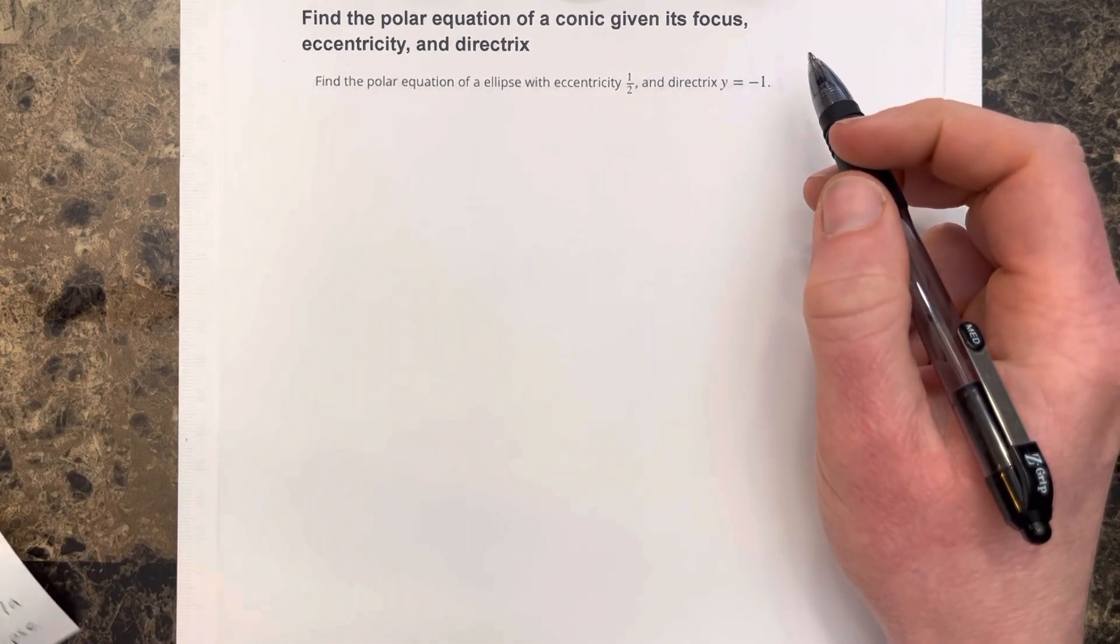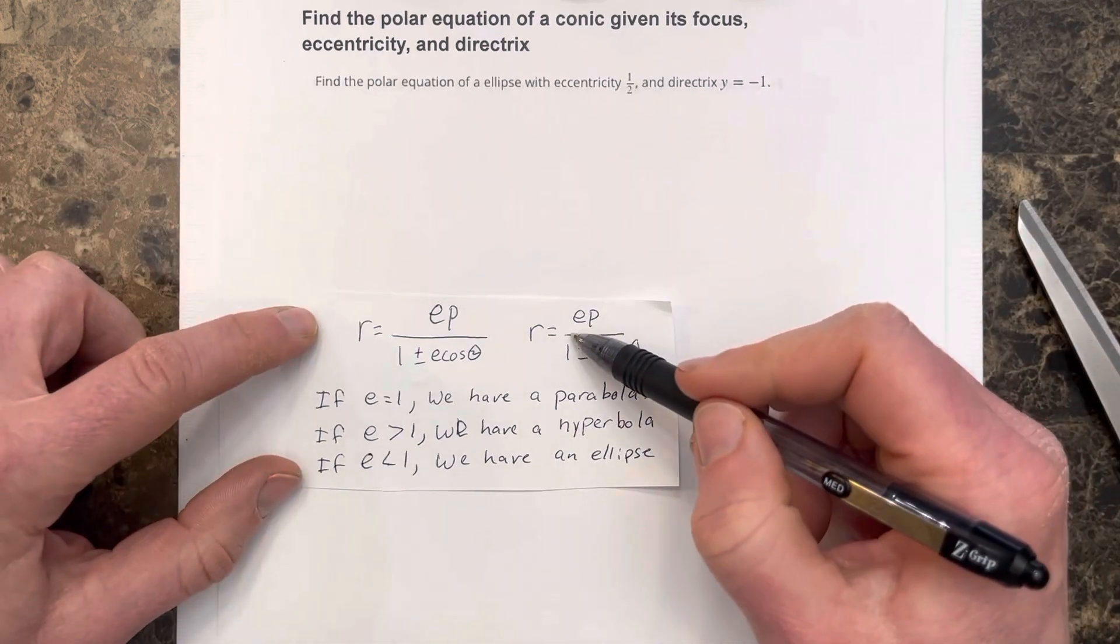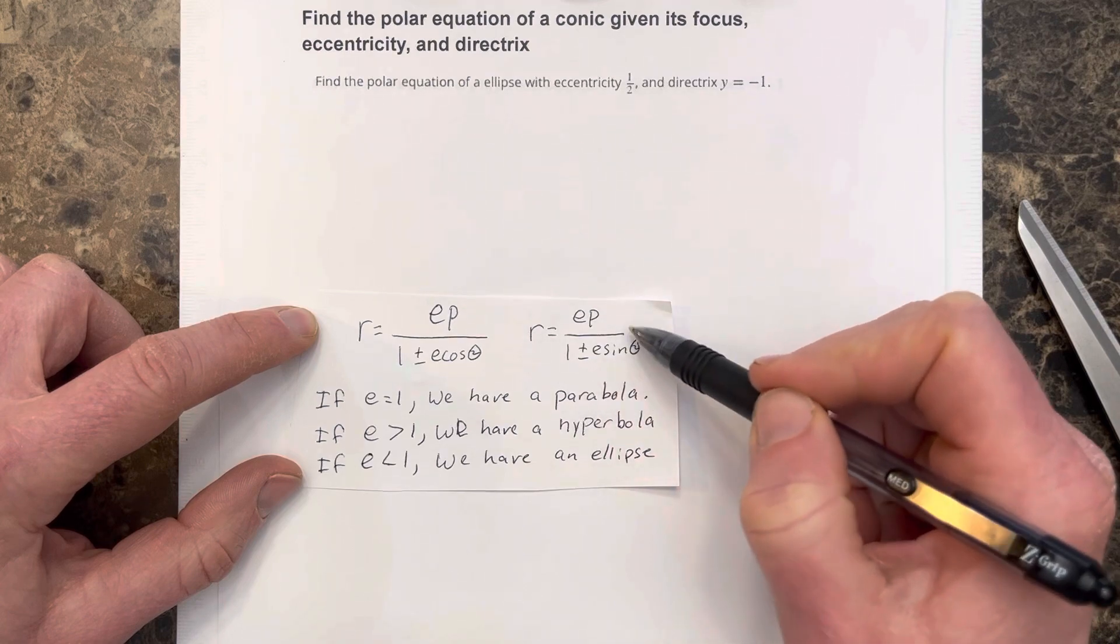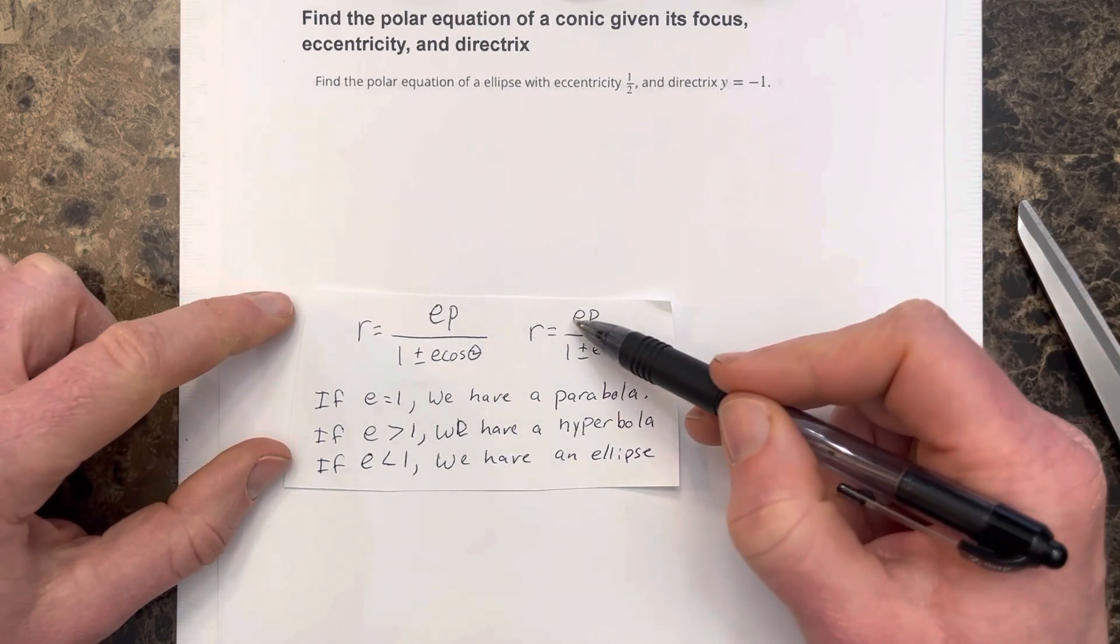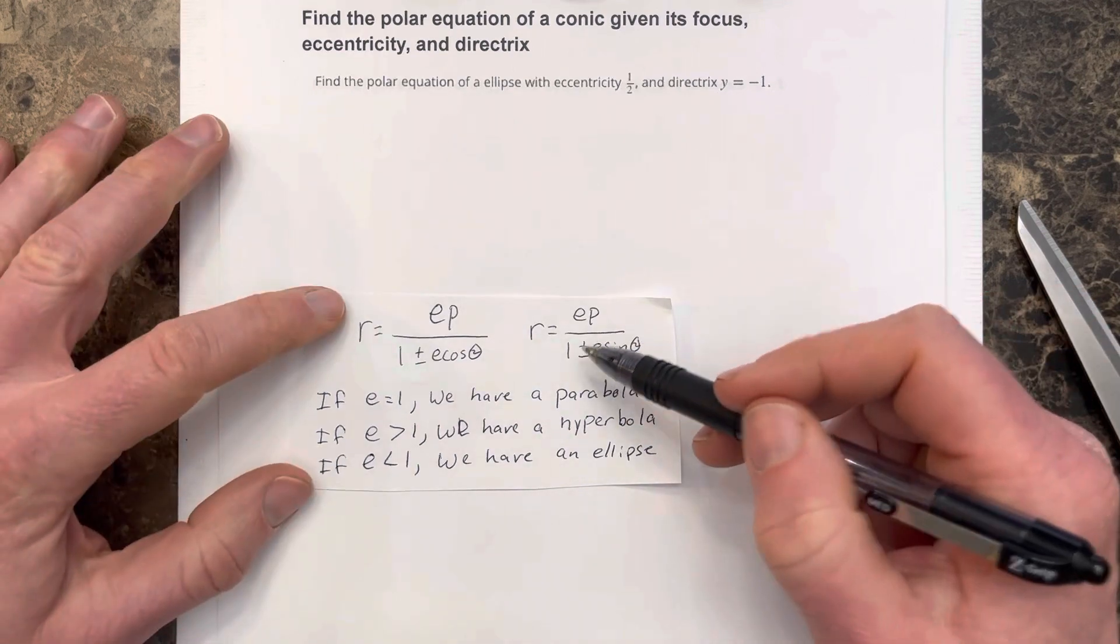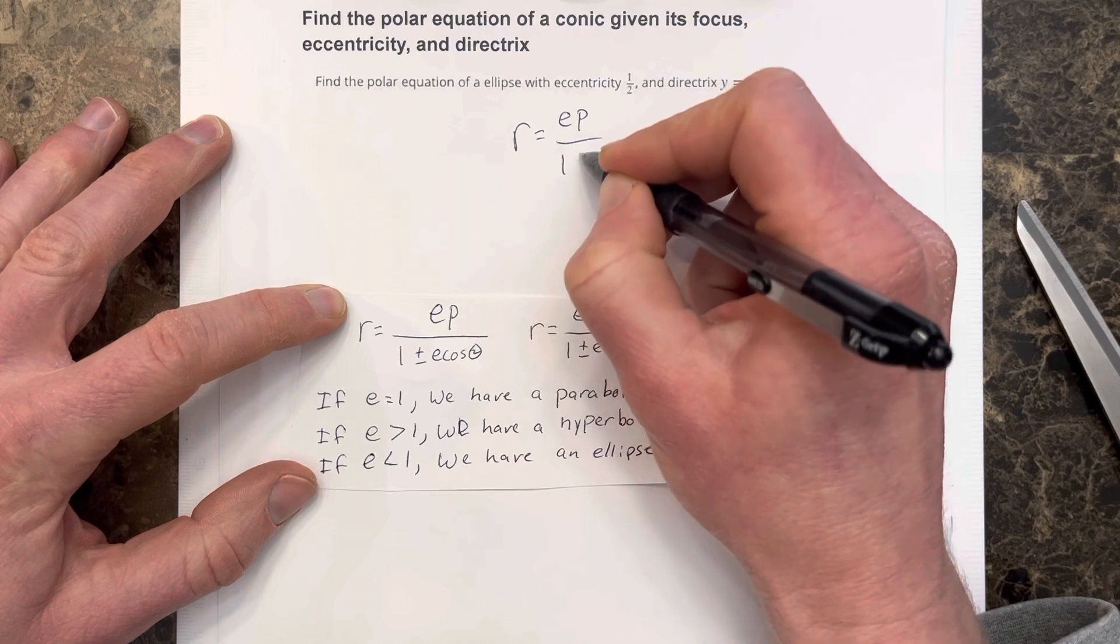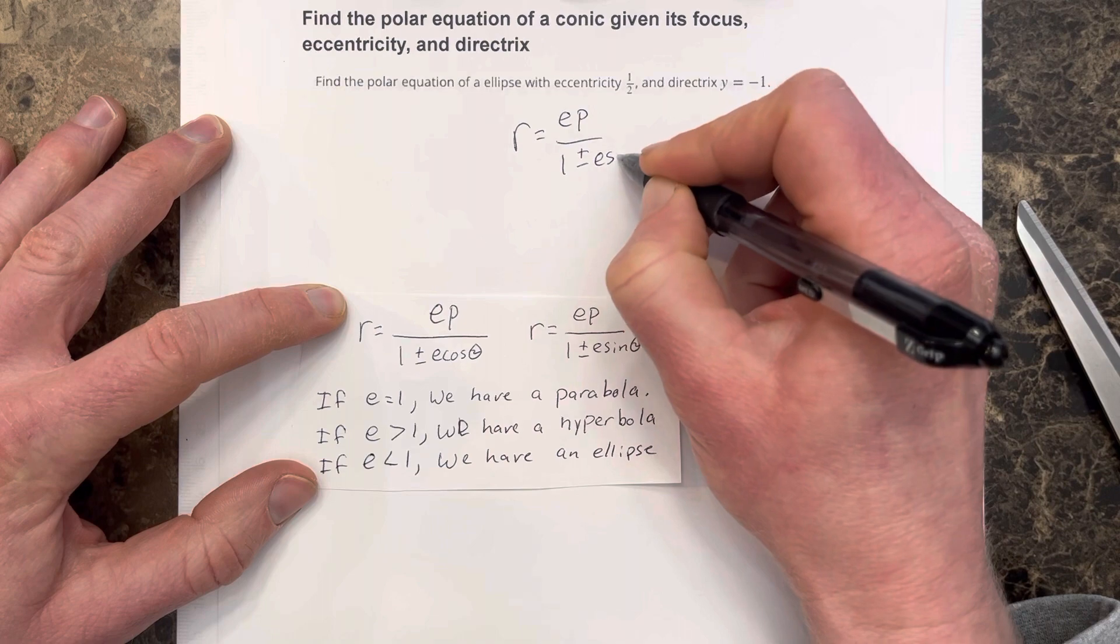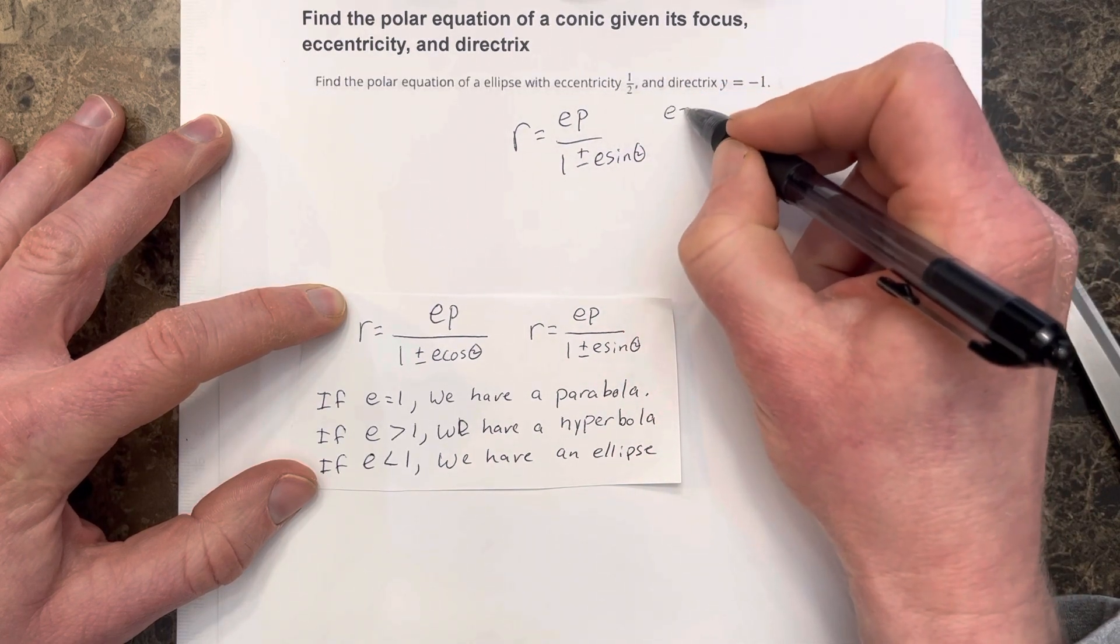Because we have y equals negative one, which is a horizontal line at negative one, that tells us we're going to be using the equation ep divided by one plus or minus e sine theta. This represents an equation where it opens either up or down, so we're going to use r equals ep over one plus or minus e sine theta. We know that eccentricity is equal to one half.